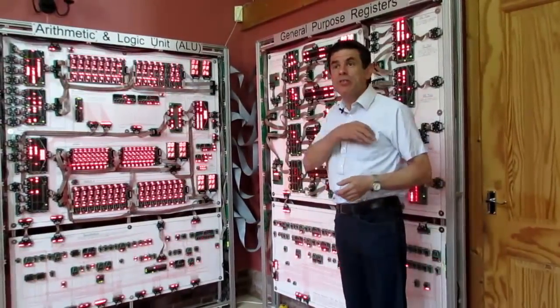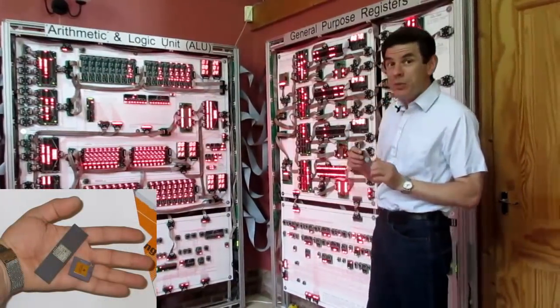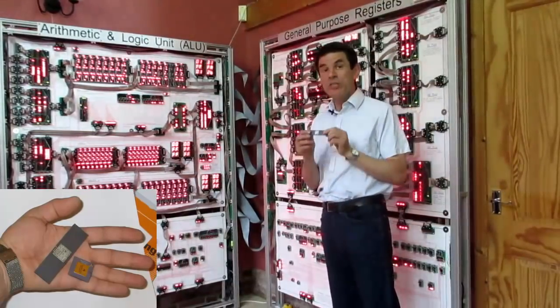So the megaprocessor is a processor like this one from the old days. These things are made out of lots of transistors, but very small ones.